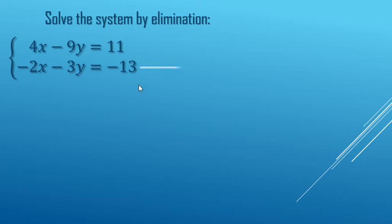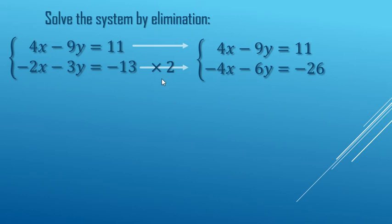So we're going to take this bottom equation and multiply it by a positive 2. Here's what that's going to look like. Negative 2x times 2 is negative 4x. Negative 3y times 2 is negative 6y. Negative 13 times 2 is negative 26. Now we can do our elimination step where we add 4x minus 4x.